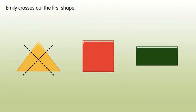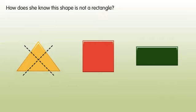Emily crosses out the first shape. How does she know this shape is not a rectangle? Because it does not have four sides and four corners.